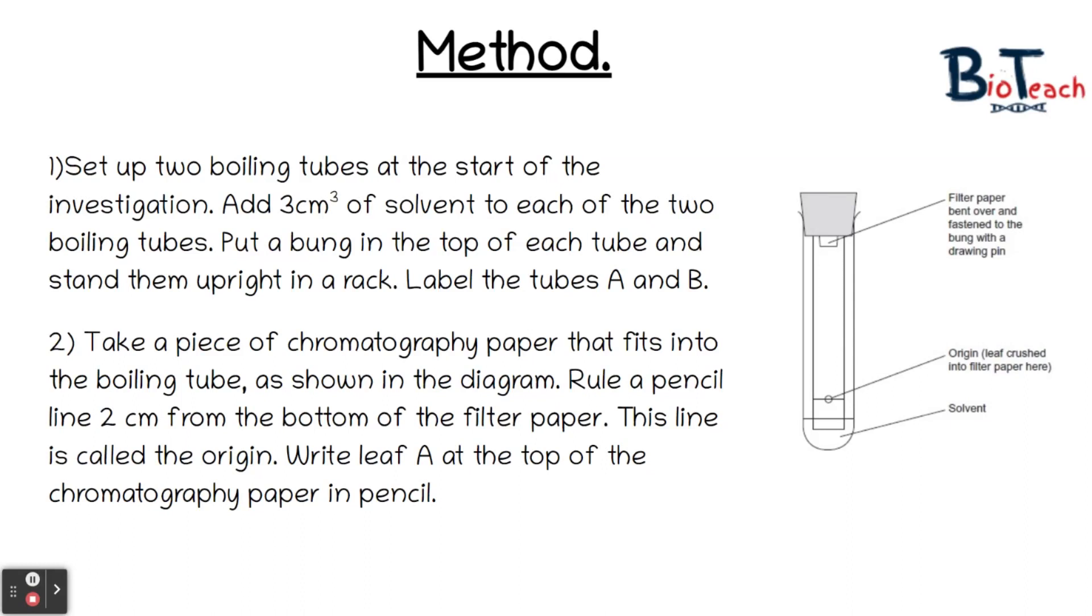You'll be given a set of boiling tubes and at the beginning you need to set up those two boiling tubes and add about three centimetres cubed of solvent to each. Put a bung in the top of each tube and stand them upright in the rack. These solvents are going to evaporate off if you don't put the bung in, so it's really important to measure it and pop the bung in as soon as you have put the solvent in. Make sure that the tubes are labelled A and B because they're going to be for your two different leaves.